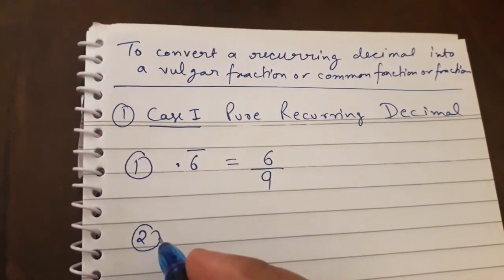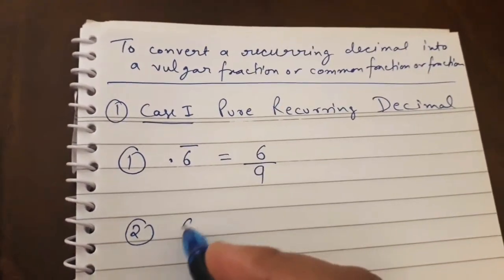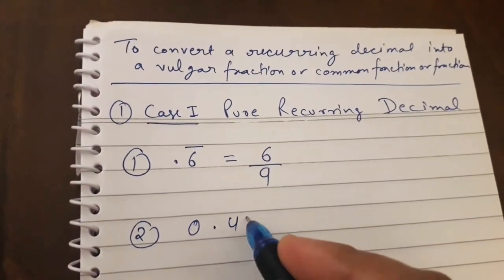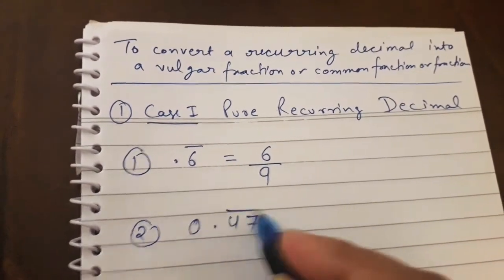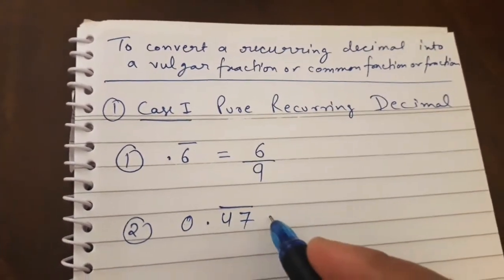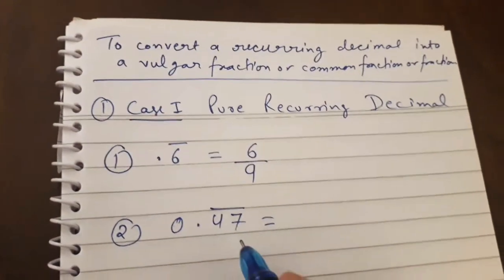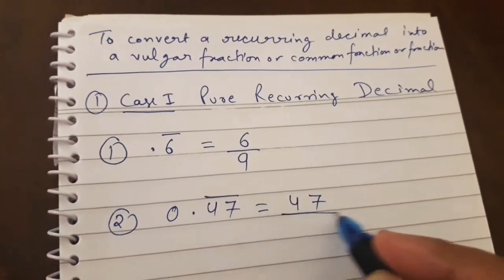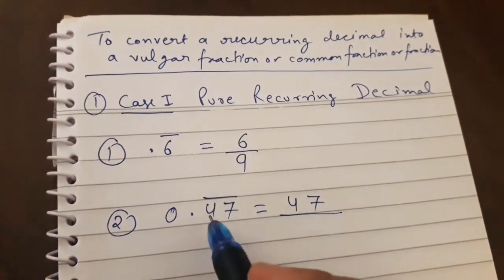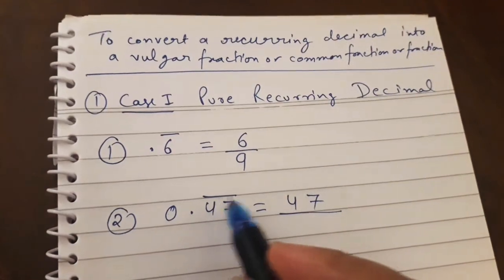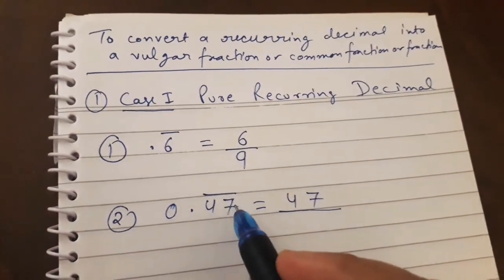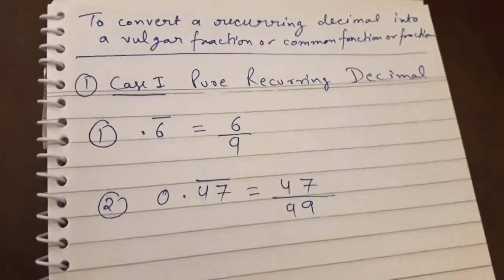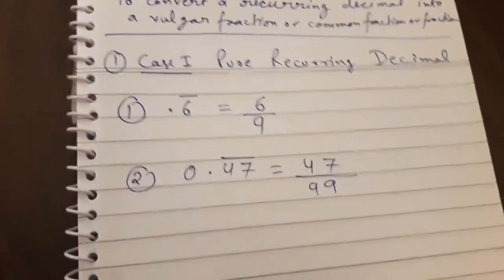Let's take one more question, like 0.47 recurring. How can we change it into a fraction? Write 47 first in the numerator. After that, how many digits are recurring? Two digits — so you write two nines in the denominator, giving 47 over 99.